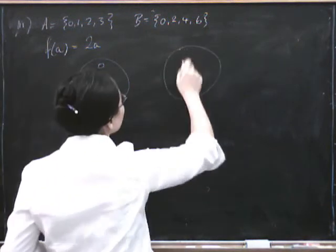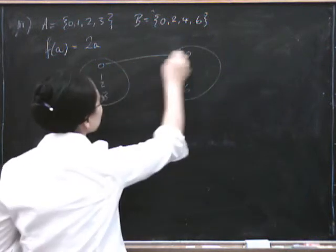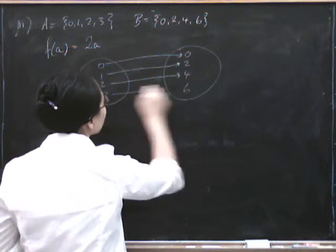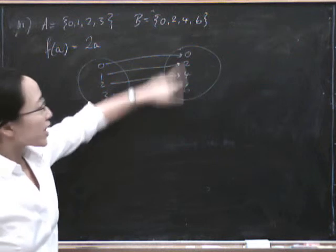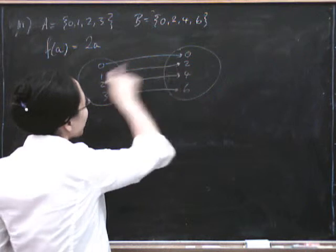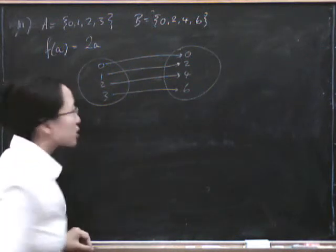And if that's our set on the left and our set on the right, then this one goes to 0, that one goes to 2, that one goes to 4, and that one goes to 6. So this, everybody goes to one thing, and everybody over here has one thing going to it. So it's a kind of very neat little correspondence, and we'll see later that that's a very special kind of function.